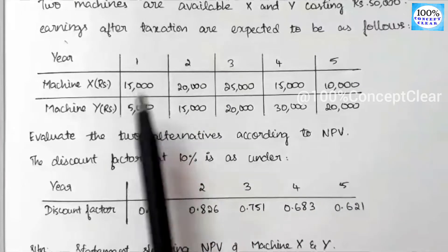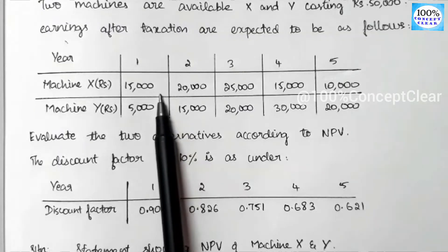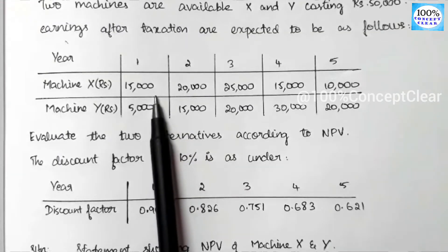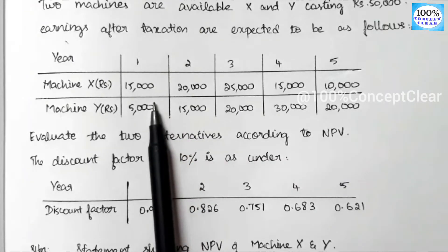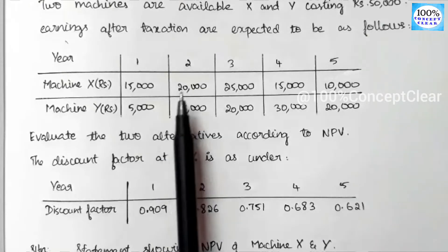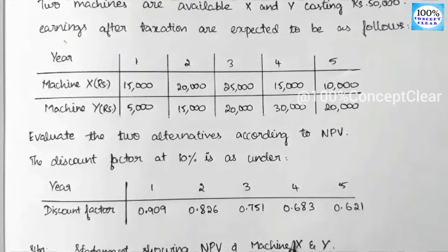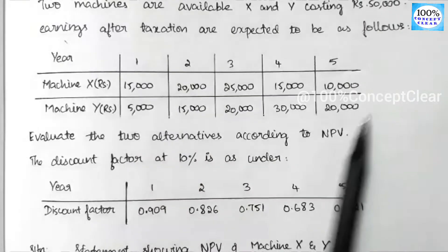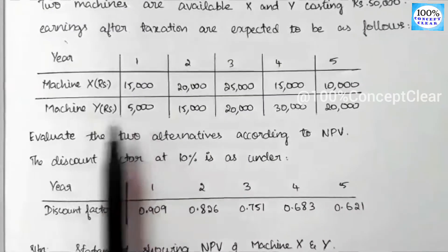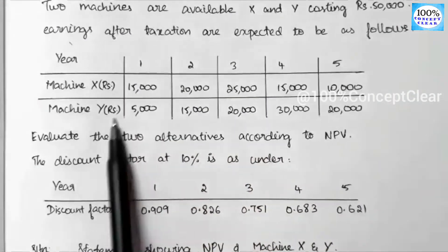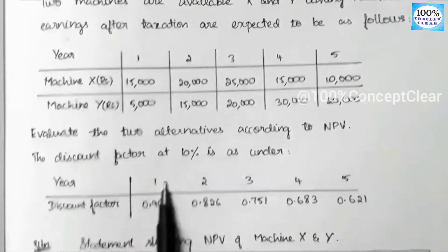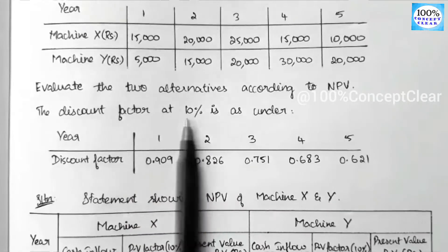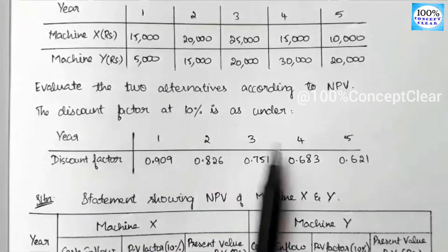In the case of cash flows before depreciation and before tax, we subtract depreciation first, then subtract tax, then add depreciation back. However, in this question, we have cash flows after tax and before depreciation, so we can use the values as given. We have a 10% discounting factor applied in each year.